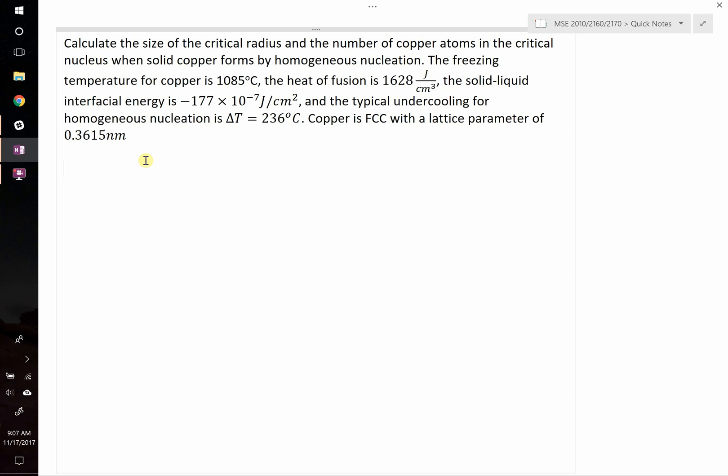Finally we're told that copper is FCC and it has a lattice parameter of 0.3615 nanometers. So how do we get started on a question like this? First thing we should write up is what is the expression for the critical radius size, R star.